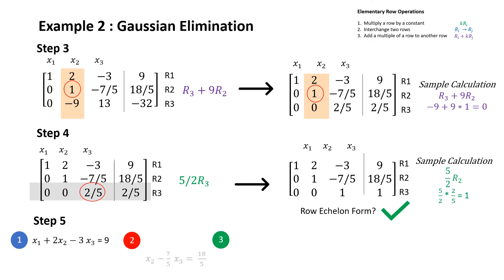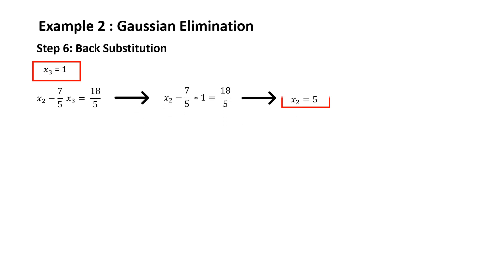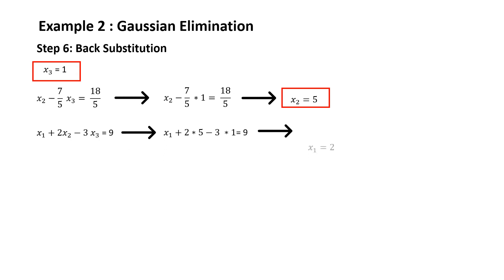Next we write down the three equations obtained from this matrix and we can conclude that x3 equals 1. We are then going to use back substitution to solve for the variables. Using x3 = 1, we plug into the second equation to solve for x2, which equals 5. Then x2 = 5 and x3 = 1 are plugged into the first equation to solve for x1, which equals 2. Therefore this is the solution to the system of linear equations.